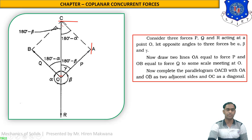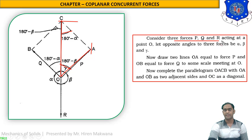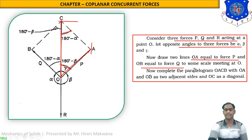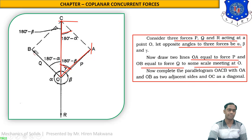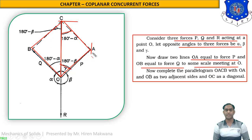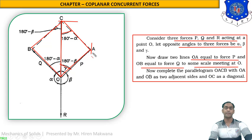Our target is to determine the angles in triangle OAC. From the figure, point O, point A, and point C form the triangle. Two angles of this triangle are now ready: 180° − beta and 180° − alpha. In the construction, lines OA equal to force P and OB equal to force Q are drawn to some scale, meeting at point O. The parallelogram OACB is completed with OA and OB as adjacent sides and OC as a diagonal. Only triangle OAC is important for the proof.